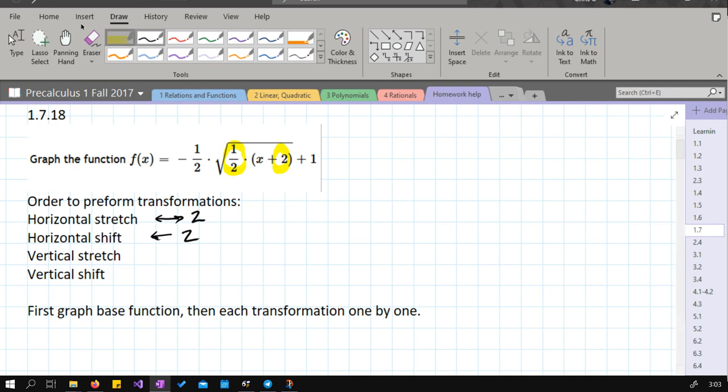Now the vertical stretch is all the verticals happen. Here's the function itself is the square root function. When you ignore the half and the plus two, your base function is just the square root of x.